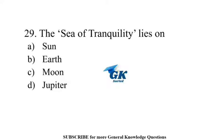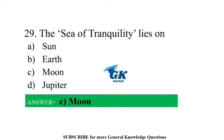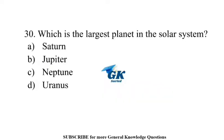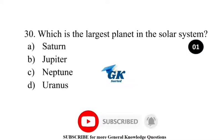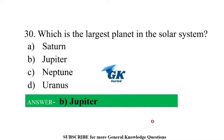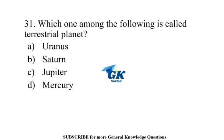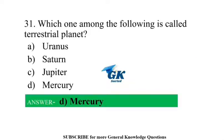The sea of tranquility lies on the Moon. Which is the largest planet in the solar system? Jupiter. Which one among the following is called a terrestrial planet? Mercury.